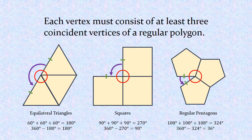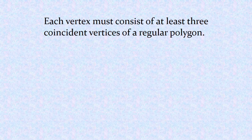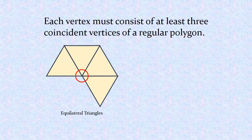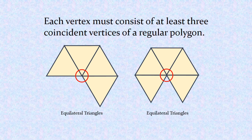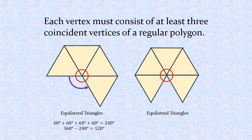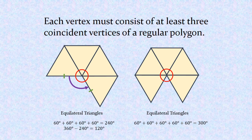Now let's look at where more than three polygons come together. For the octahedron, four equilateral triangles come together — that's 4 times 60, or 240 degrees. Subtracting from 360 gives a gap of 120 degrees, and we glue those edges together. For the icosahedron, five equilateral triangles come together — 5 times 60 is 300 — leaving a gap of only 60 degrees, and those two edges come together.